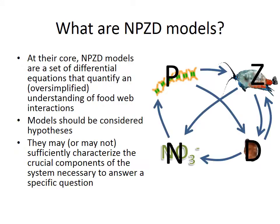At their core, NPZD models are really a set of differential equations that quantify an oversimplified understanding of food web interactions. They're trying to boil the pelagic ecosystem down into the simplest possible set of equations that we could use to understand how it behaves. You should really think of individual models as hypotheses. Scientists, when they build a model, are putting in what they think are the most important components of an ecosystem — really constructing a hypothesis about how that ecosystem behaves. That model then may or may not sufficiently characterize the crucial components of the system necessary to answer a specific question.